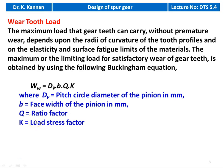Wear tooth load: the maximum load that gear teeth can carry without premature wear depends on the radius of curvature of tooth profiles and the elasticity and surface fatigue limits of the material. The limiting load for satisfactory wear is given by the Pugging arm equation: W_wear = D_P · B · Q · K, where D_P is the pitch circle diameter of the pinion in mm, B is the face width of the pinion in mm, Q is the ratio factor, and K is the load stress factor. These are all the loads — bending load, dynamic load, static load, and wear tooth load — to be considered for spur gear design.